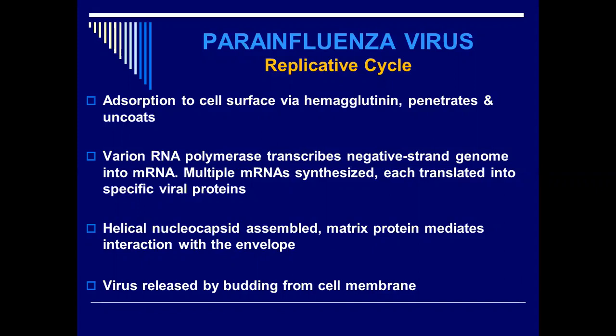The RNA-dependent RNA polymerase transcribes the negative-strand genome into mRNA, and then multiple copies of mRNA are synthesized. Each mRNA molecule is translated into specific viral proteins. We have two types: structural proteins concerned with the structure of the virus, and functional proteins concerned with the activity or function of the virus.